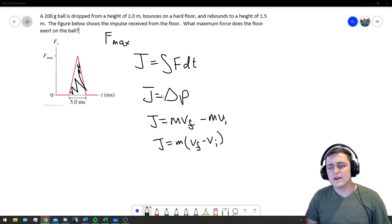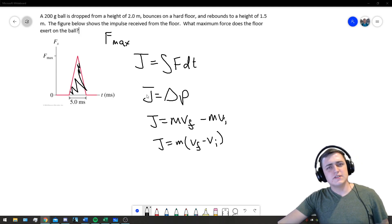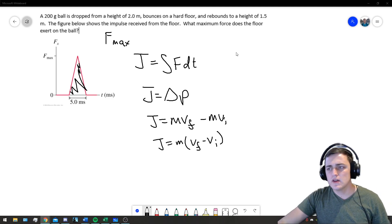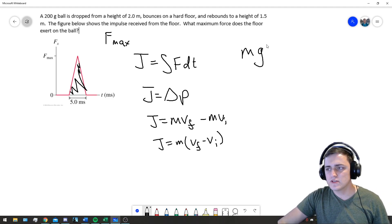We need to find our initial and final velocities. To do that, we're going to apply the conservation of energy. We know the ball is dropped from a specific height and that defines its initial potential energy, MGH, and that's equal to its initial velocity...